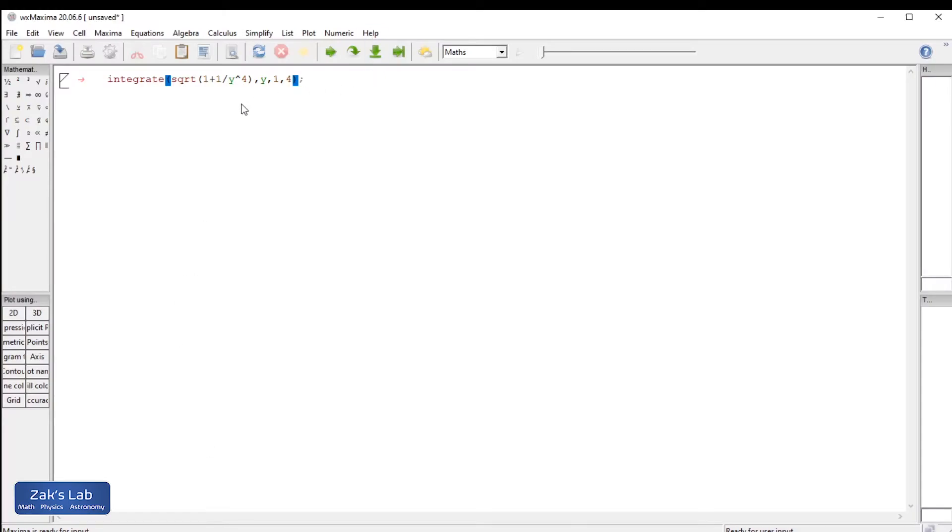So I'm in Maxima, and I typed in the integrate function, and I put this thing in, the square root of 1 plus 1 over y to the 4th, as y goes from 1 to 4, and I just wanted to show what happens. I hit Shift-Enter, and it just gives me another copy of the same integral. Shame on them for not writing the differential in there, but we know what they mean.